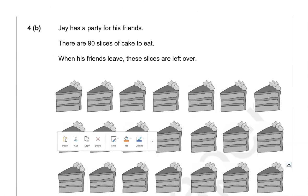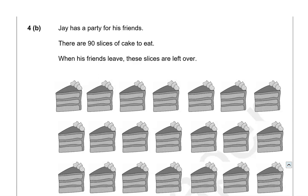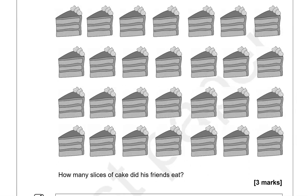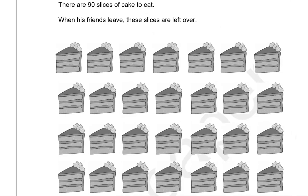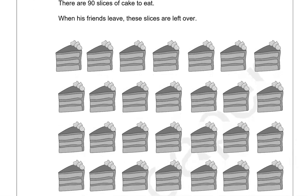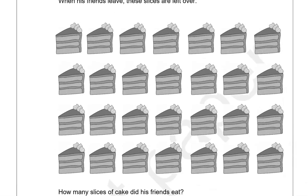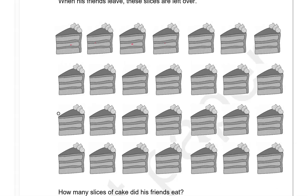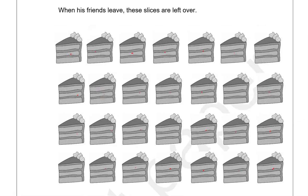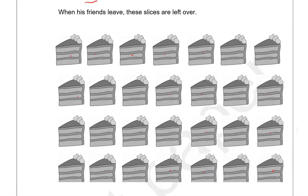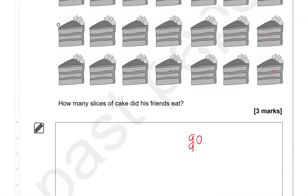Jay has a party for his friends. There are 90 slices of cake to eat. When his friends leave, some slices are left over. How many slices did his friends eat? Counting the leftover slices gives us 28. So 90 take away 28, using a calculator, gives us 62 slices eaten.